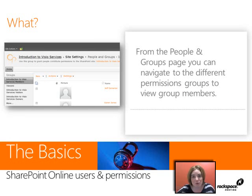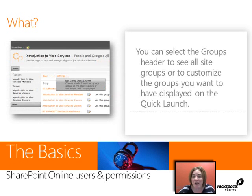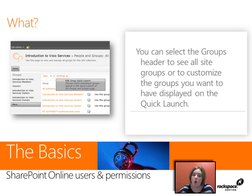The first one is the People and Groups page. From this, you're really going to be able to navigate into the different groups and see the permissions that group has and what people are members of that group. When you first click on that page, it's going to show you items in the quick launch, but you can customize that to show different groups. By default it shows a couple, then you can hit More to see all of them, or go to Settings and edit the group quick launch to show only specific groups.